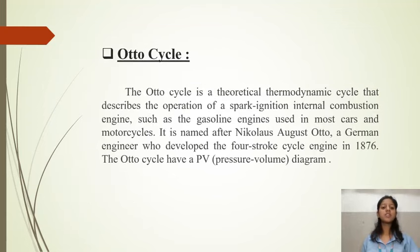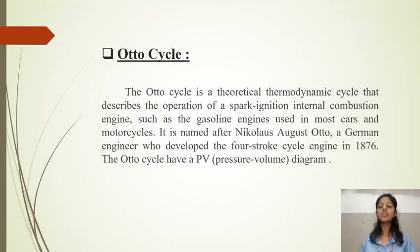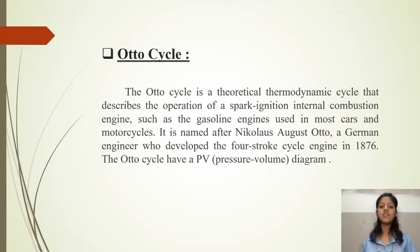The Otto cycle is a theoretical thermodynamic cycle that describes the operation of a spark ignition internal combustion engine, such as gasoline engines used in most cars. It is named after Nikolaus August Otto, a German engineer who developed the four-stroke engine in 1876. The Otto cycle has a PV diagram — PV means pressure-volume diagram.